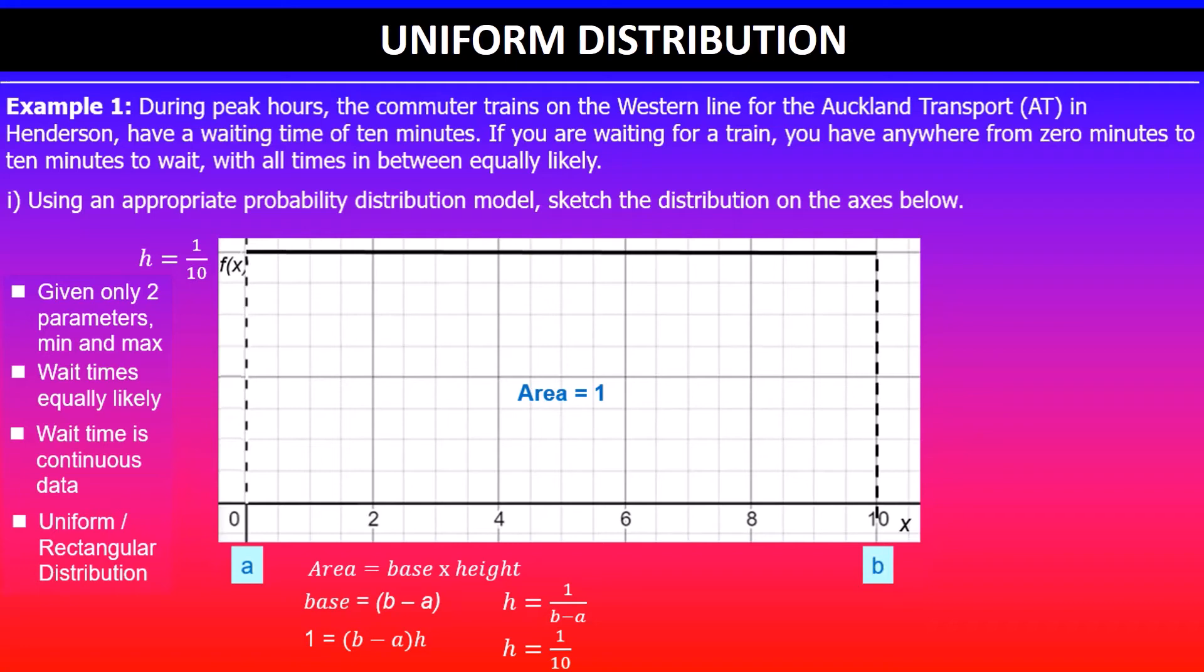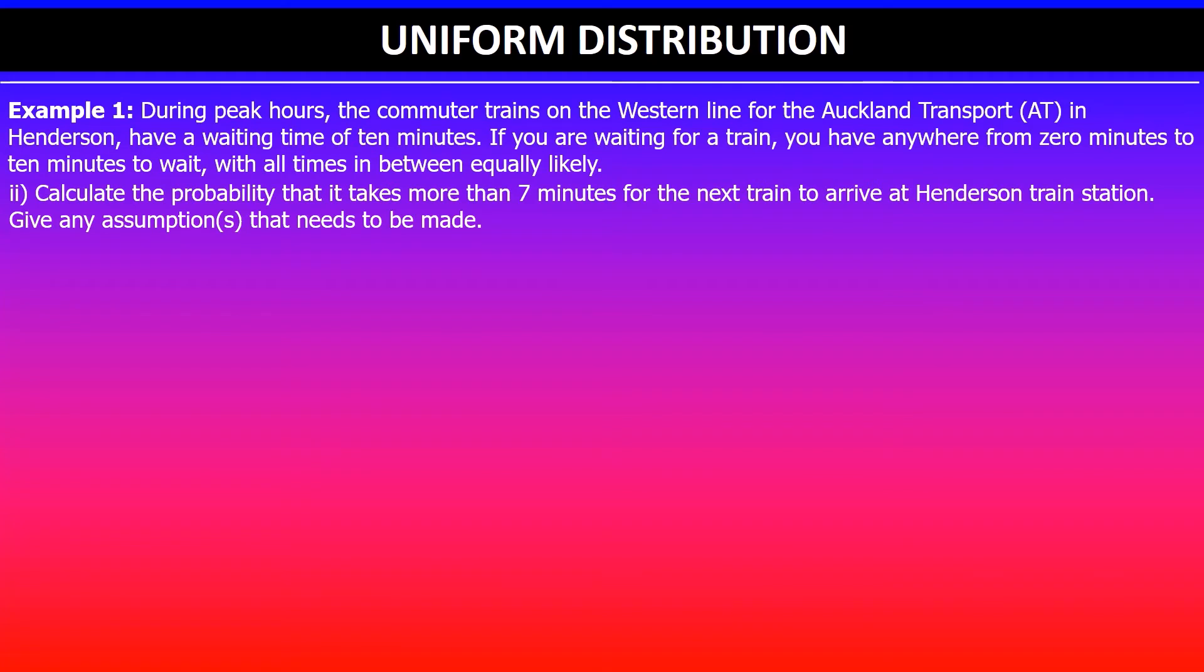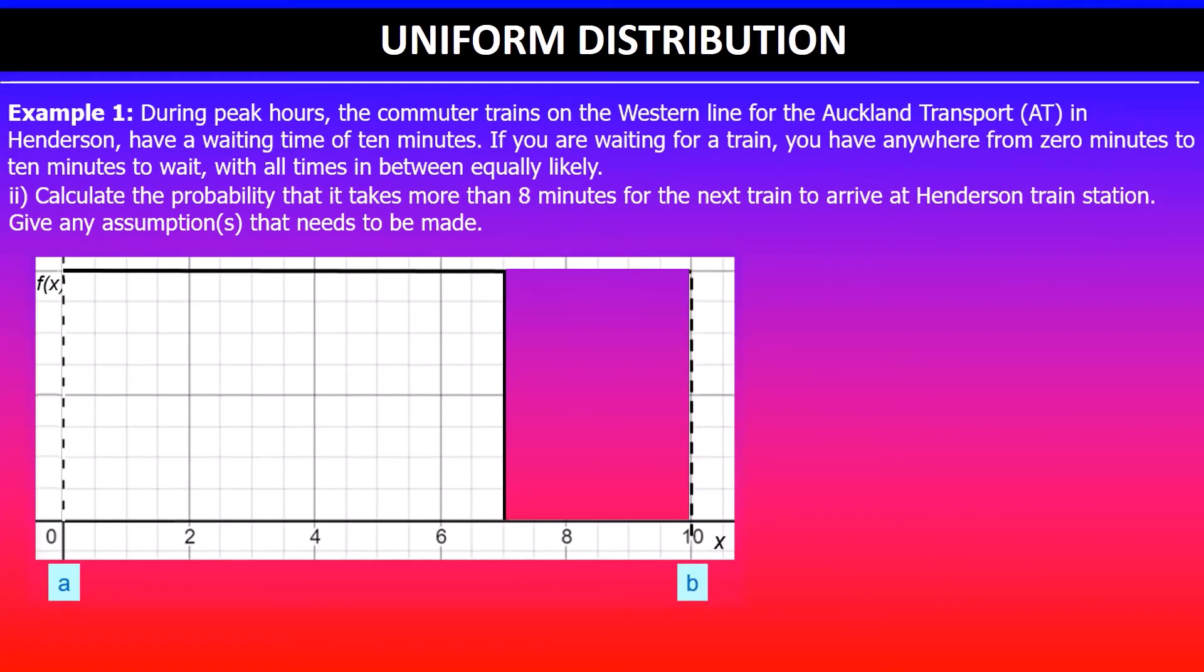Moving on, the second part of the problem says calculate the probability that it takes more than seven minutes for the next train to arrive at Henderson train station. Give any assumptions that you need to make. In this case I've already drawn the shaded area that we are after, so it's more than seven, from seven all the way to 10.